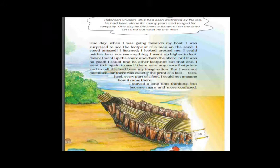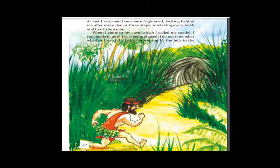Robinson was going towards the boat and was surprised to see the footprint of a man on the sand. He looked in and around, listening for somebody's voice. He went up to the shore and then down the shore but found nobody. He went again to check if there were more footprints — he thought it might be his imagination. But the footprint was there. He stayed a long time thinking, becoming more and more confused, and finally returned home very frightened, looking behind him every two or three steps, mistaking every bush and tree to be a man.